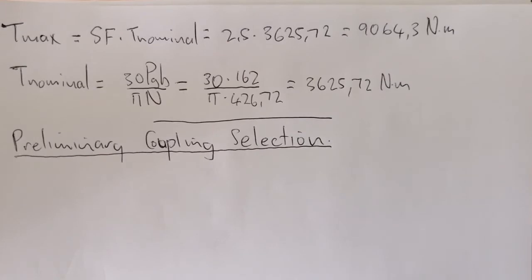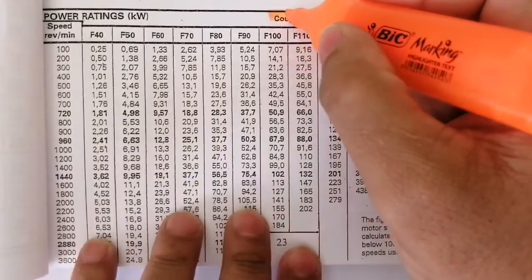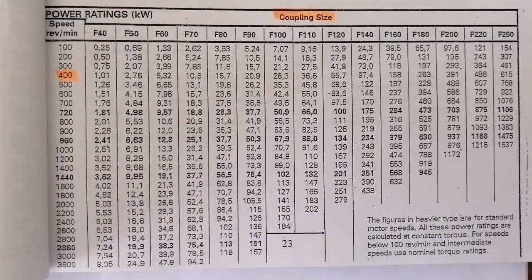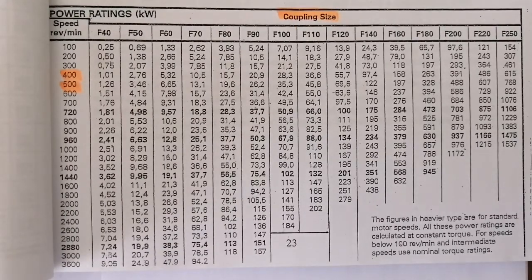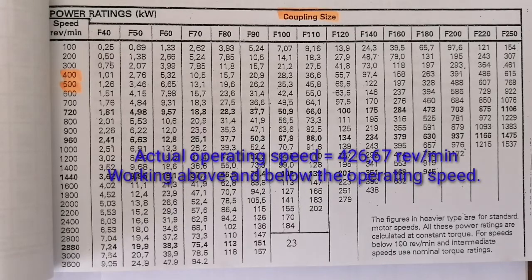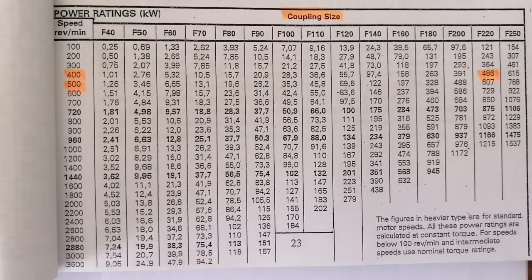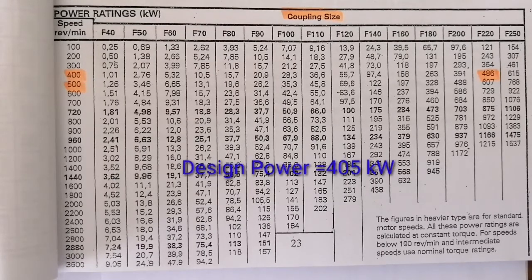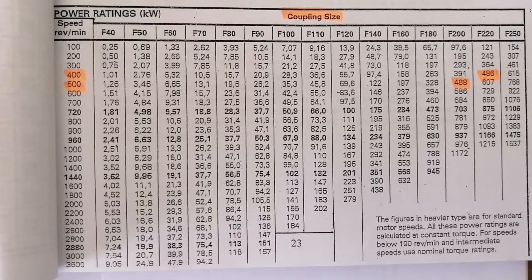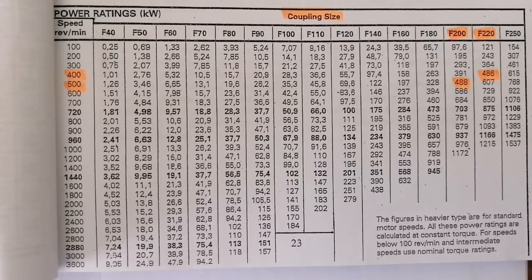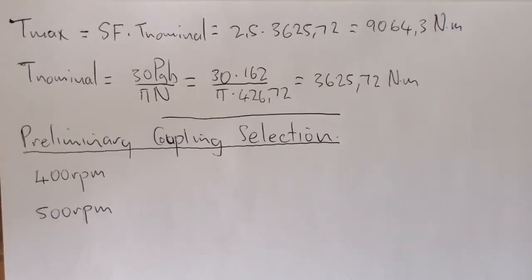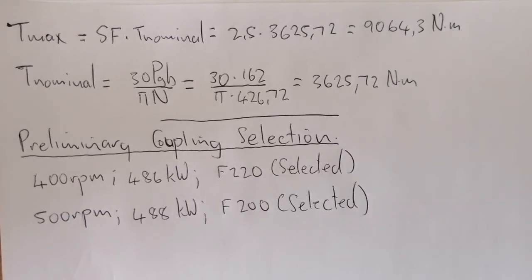Preliminary coupling selection - looking at the coupling size table between 400 RPM and 500 RPM, that's where our speed falls in. For 400 RPM, the power greater than the design power of 405 kilowatt is 486. For 500 RPM we have 488. This leads us to an F220 coupling for 400 and F200 for 500 RPM. Thus our preliminary coupling selection is F220 for 400 and F200 for 500 RPM.